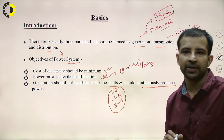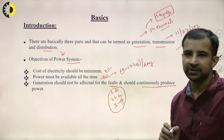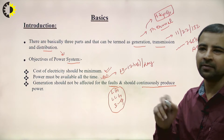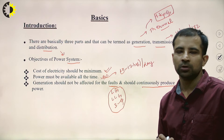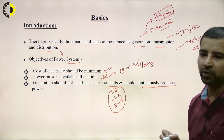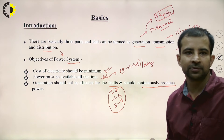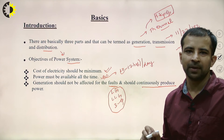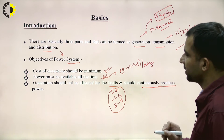To summarize the basic objectives: cost of electricity should be minimum; power must be available at all times — not just 10, 12, or 15 hours; and even if a fault occurs in the system, power production must continue. These are the basic objectives of the power system.